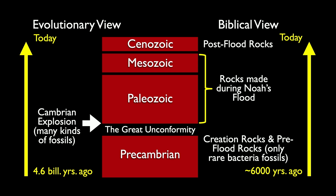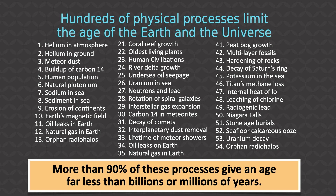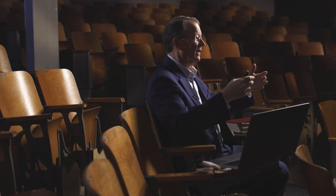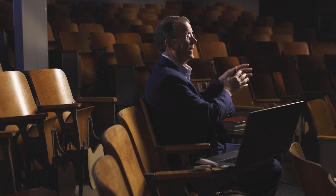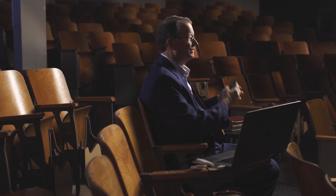We're told that radiometric dating proves the rocks are millions of years old. But before we look at those methods, we should note that there are hundreds of physical processes that limit the age of the Earth and the universe. Any physical process can theoretically be used as a clock — you observe the rate today and extrapolate back. Creation scientists have found that more than 90% of these processes give an age far less than billions of years. Let me give a few examples, starting with helium in the atmosphere.